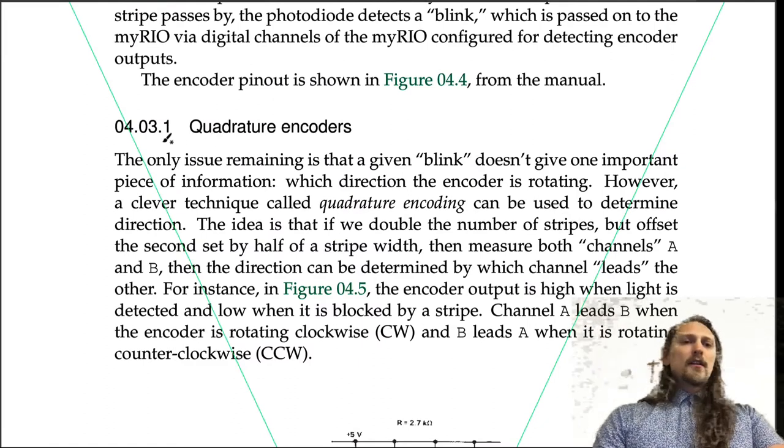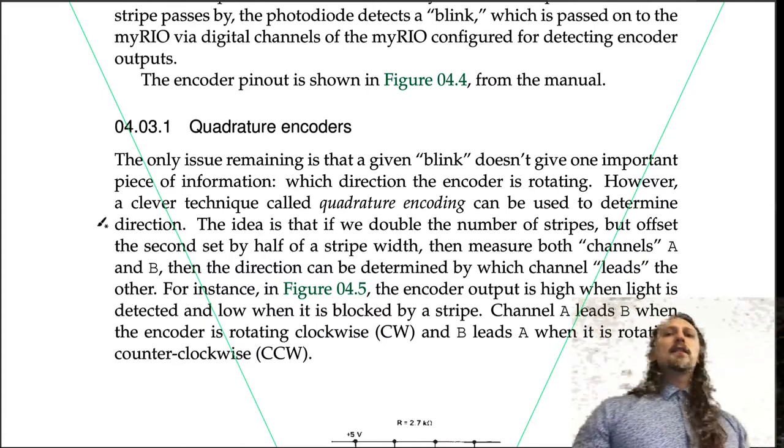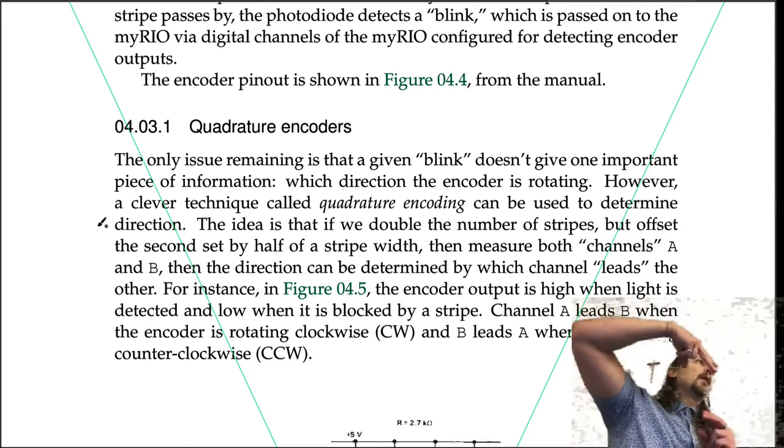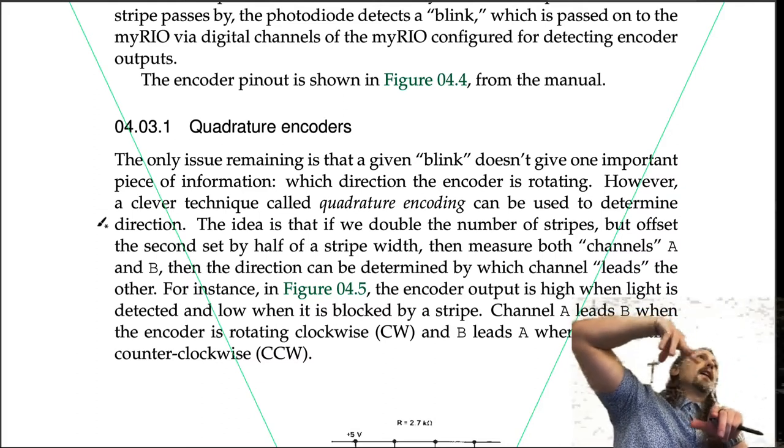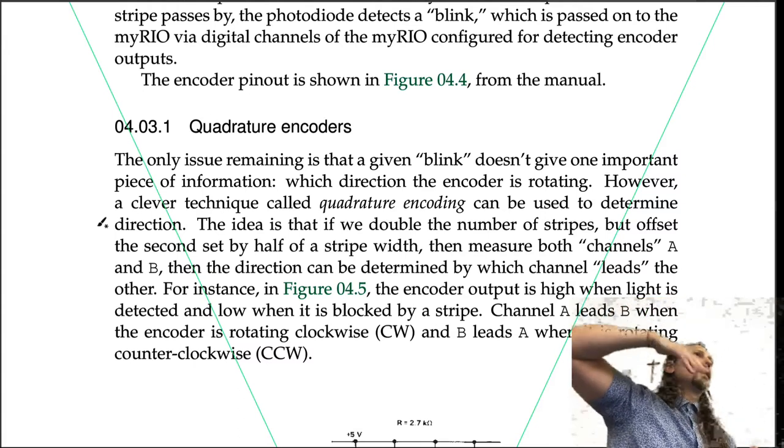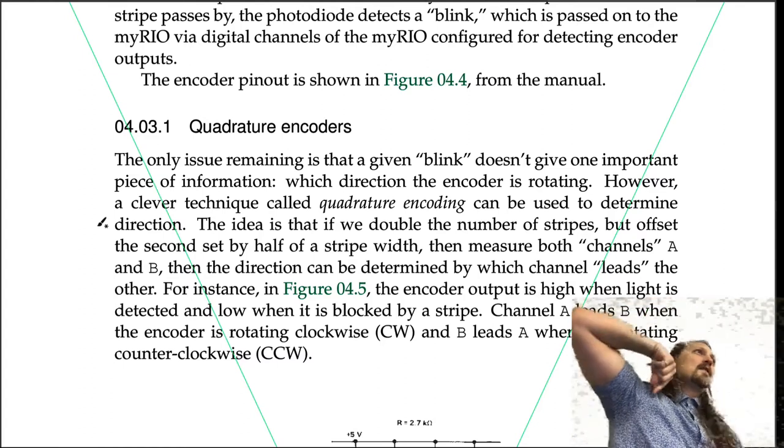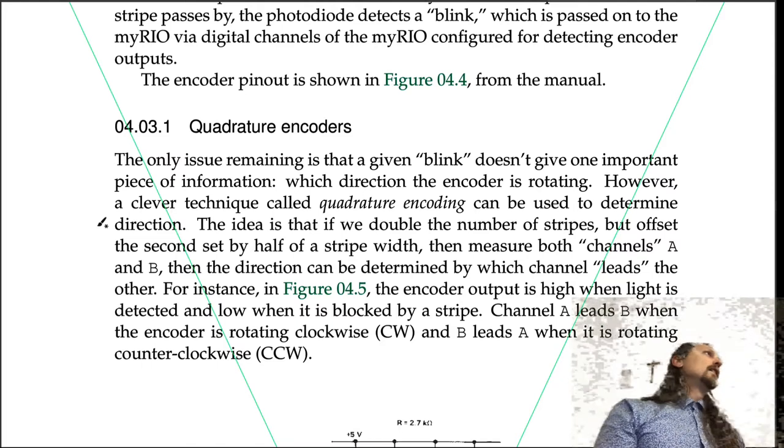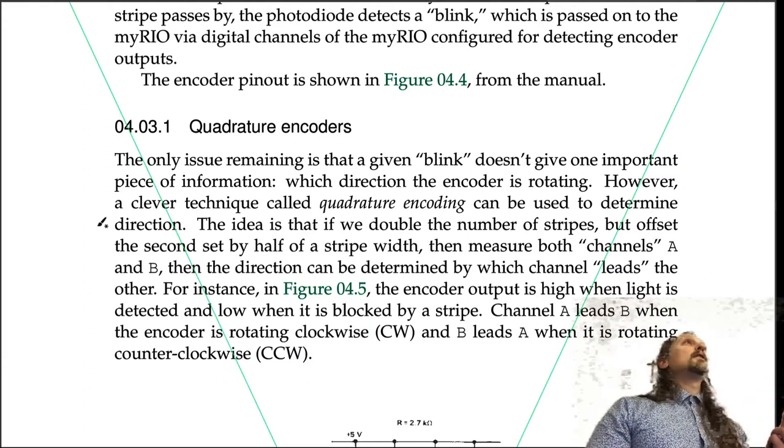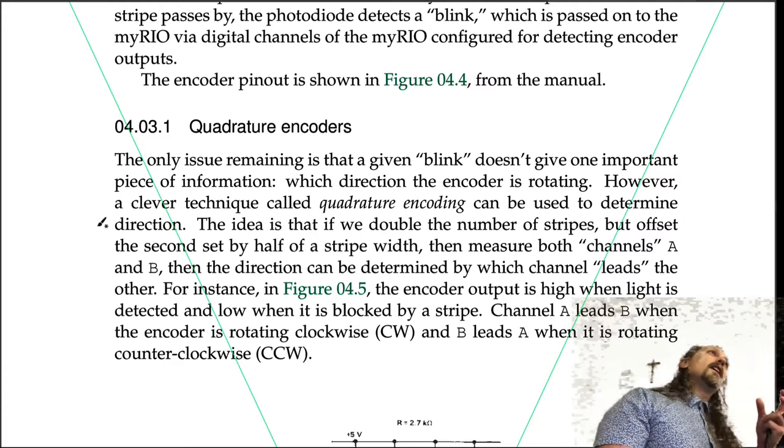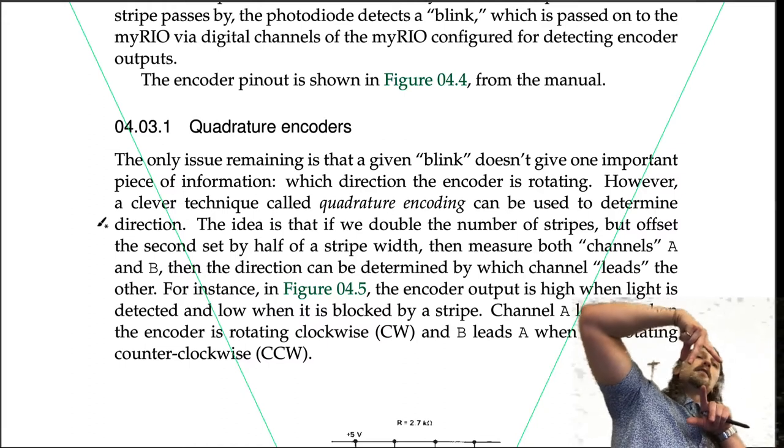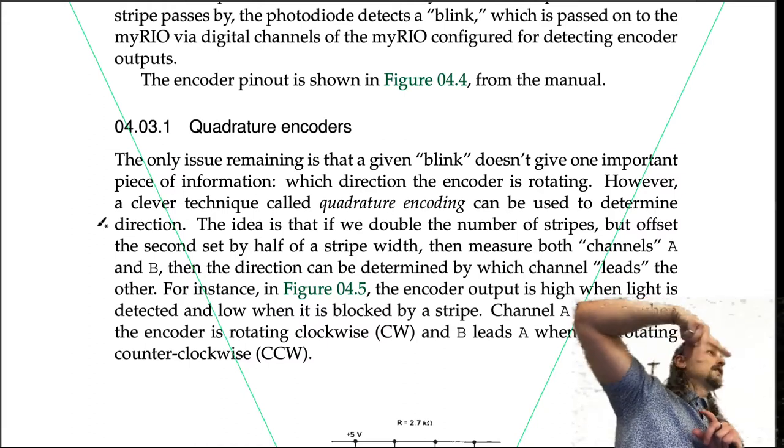With quadrature encoders, the only issue remaining is that a given blink doesn't give one important piece of information: which direction the encoder is rotating. You can think of it as being like pizza slices, with every other slice having mushrooms. A light source looking at the mushroom slice knows that the encoder rotated by a certain amount but doesn't know which direction—it could be the mushroom slice to the left or the right.